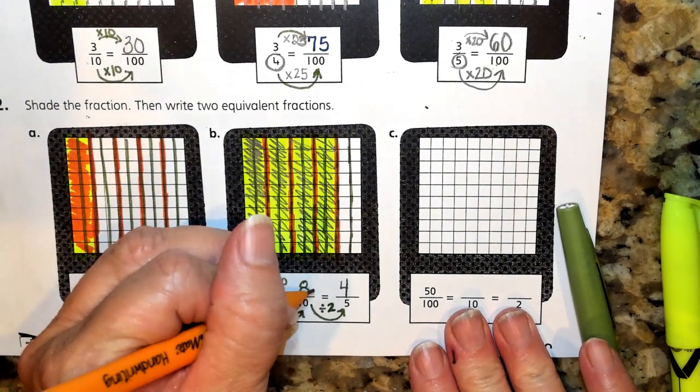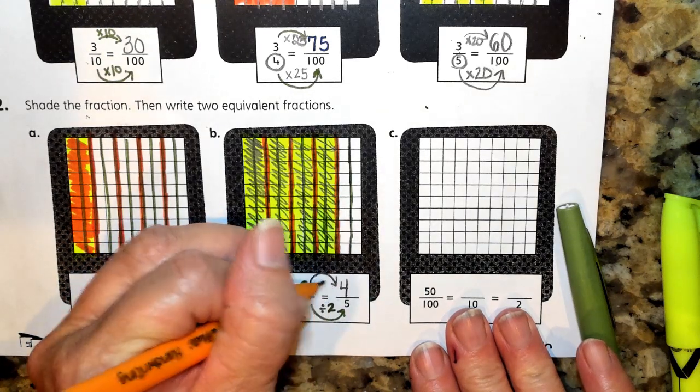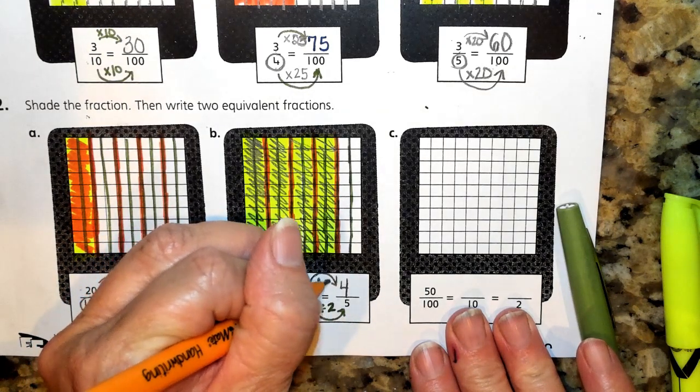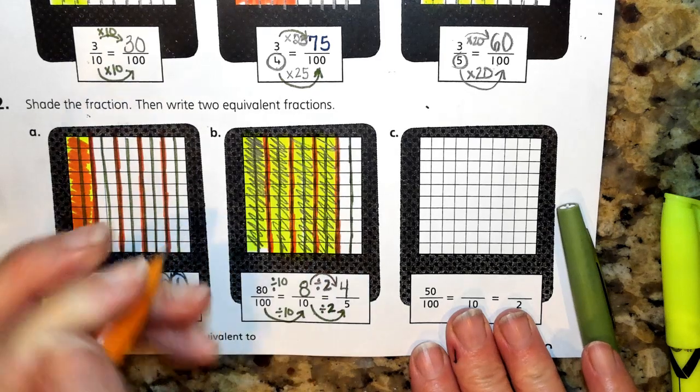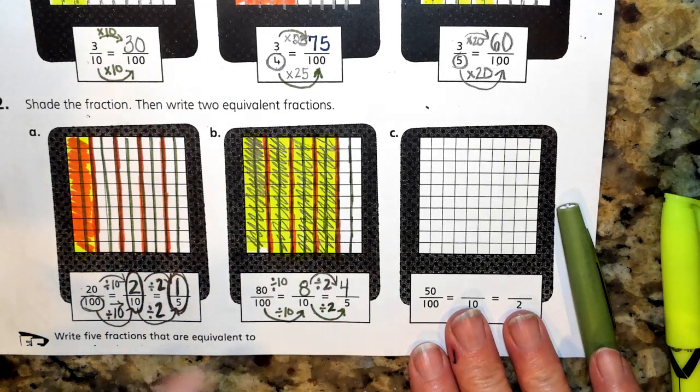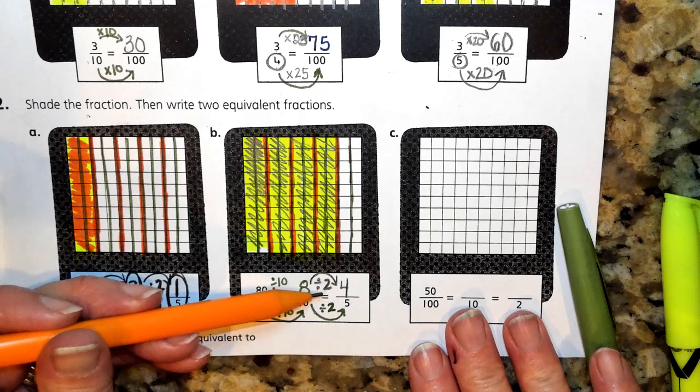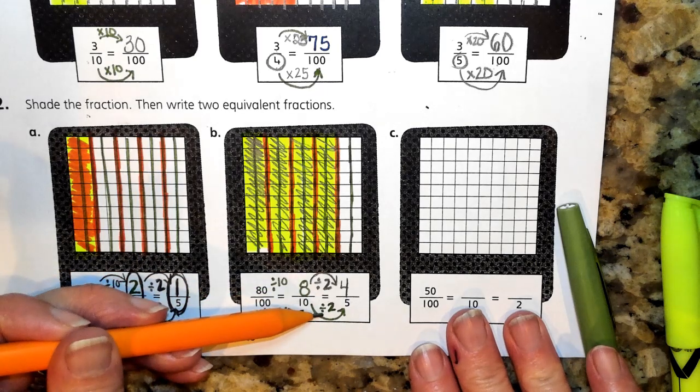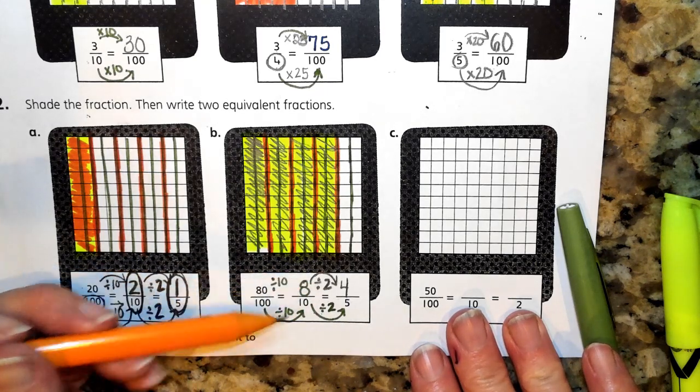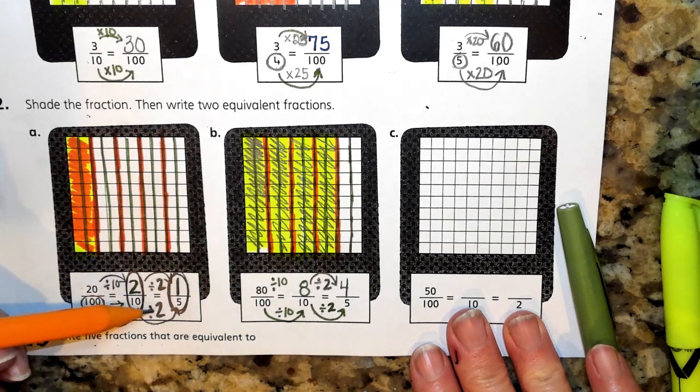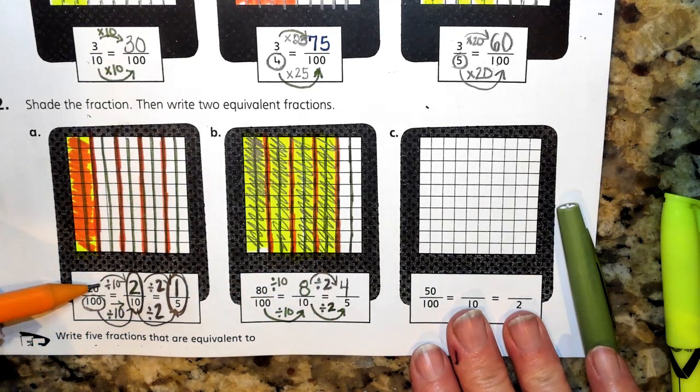And if I think about 8 being divided by 2, that number is 4. So it all makes sense. Are you noticing that whatever relationship we keep on the bottom, we're also keeping on the top every single time? That relationship is not changing.